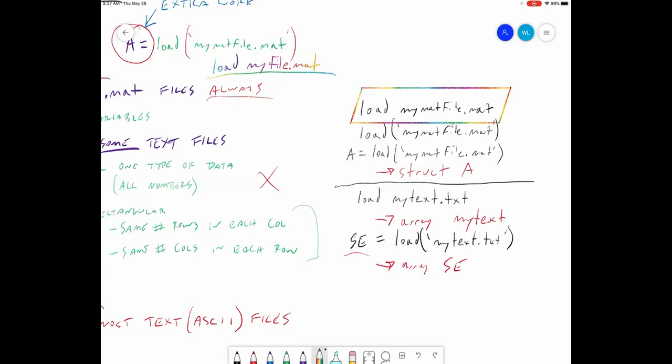As far as the text file goes, either way works. If the name of the file is fine with you as the name of your array, then do it that way. If you want to change the name of the array to something else, then do it this way. Okay, that's load.